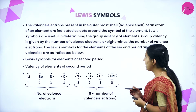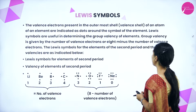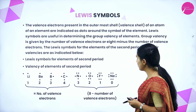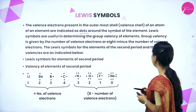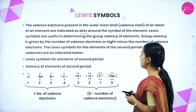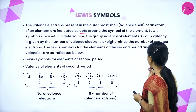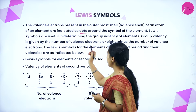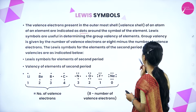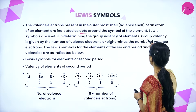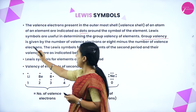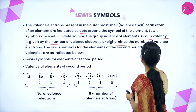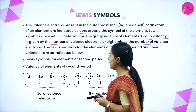Next we will see Lewis symbols. The valence electrons present in the outermost shell of an atom of an element are indicated as dots around the symbol of the element. Lewis symbols are useful in determining the group valency of elements. Group valency is given by the number of valence electrons, or 8 minus the number of valence electrons.